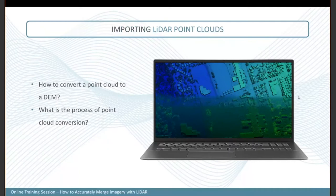LiDAR comes in a point cloud format, typically a LAS file. From this point cloud, to perfectly register your images for photogrammetric processing, we need to derive the surface model and intensity images from your LiDAR point cloud. The first step, once your photogrammetric project is created, is to bring in your LiDAR point cloud to generate intensity images and a LiDAR surface DSM.